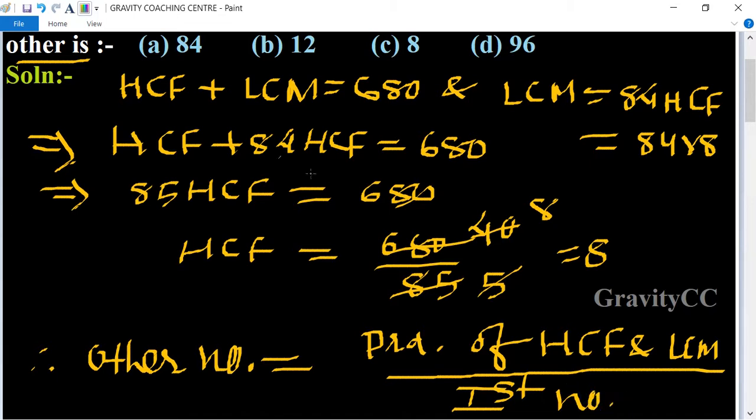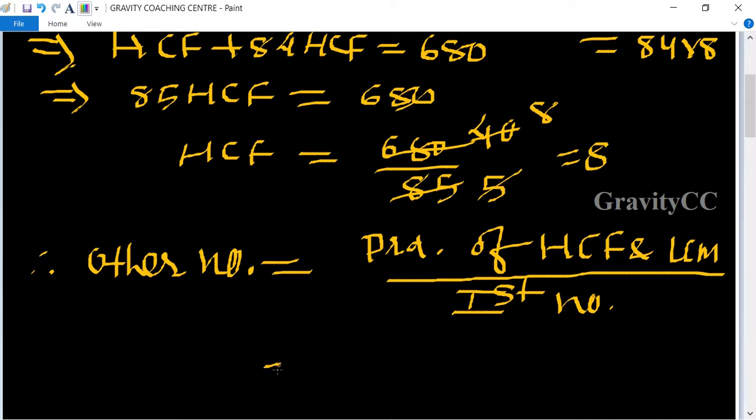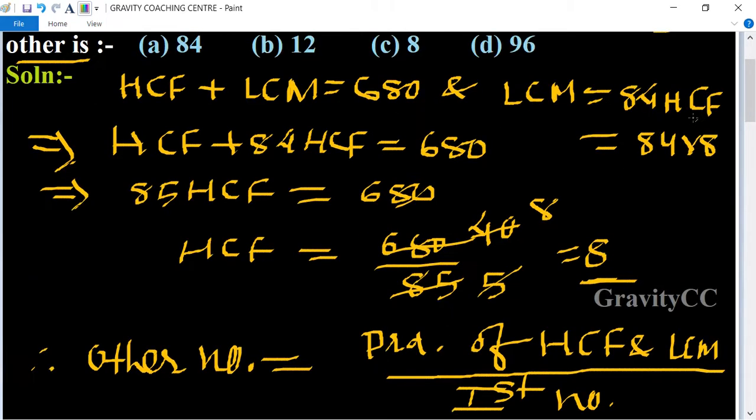So here one of the number is given as 56. So 56, HCF is 8 multiply and LCM is 84 into 8.